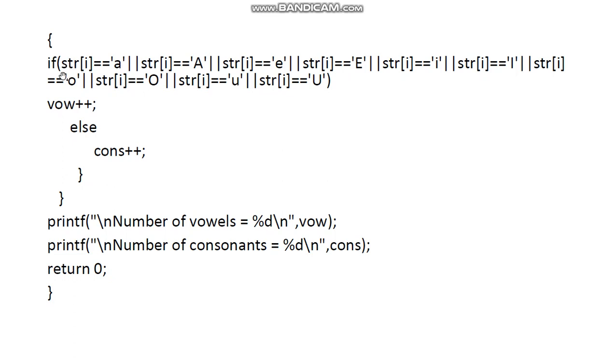Within that we need to have one more if statement where we compare the current character with the different instances of the vowels, both lower case and upper case characters. And when this if statement, any of the condition in this statement is true, then the vowel count gets incremented. Else the consonant count will be incremented. So, this ends with the processing.